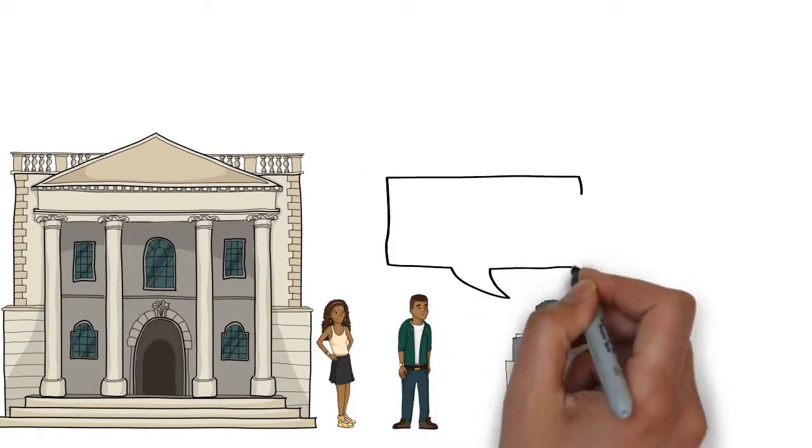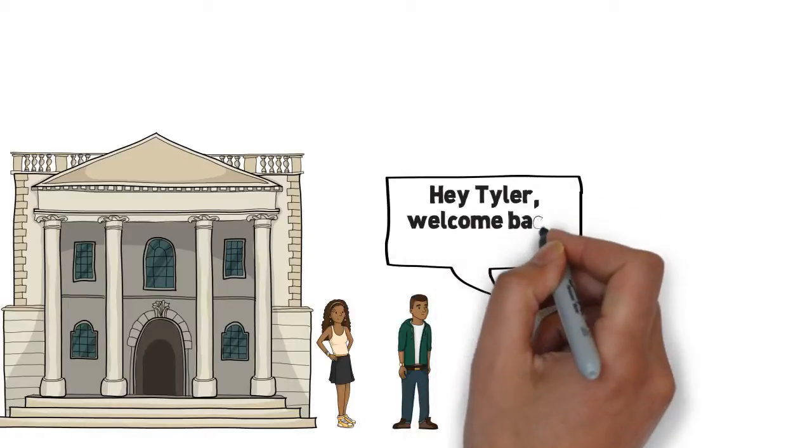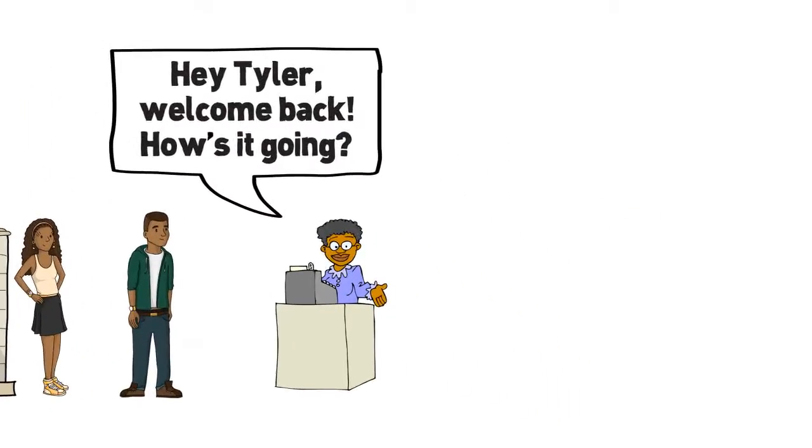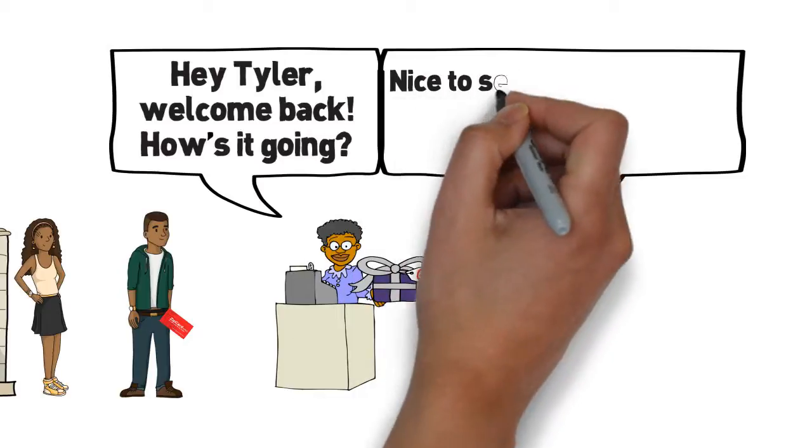Every time Kat sees Tyler at her favorite local haunts, she's intrigued. They all seem to know Tyler's name and they all want to give him something extra.